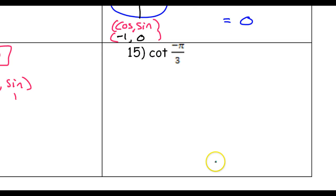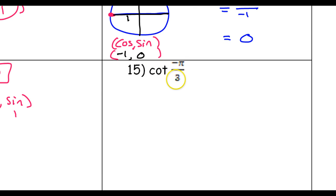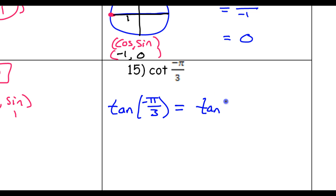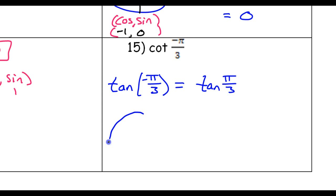Finally, the last problem: cotangent of negative pi over three. Cotangent is a reciprocal trig function — it's the reciprocal of tangent. So we'll do the tangent of negative pi over three first, and then whatever we get, we'll do the reciprocal of that. The tangent of negative pi over three is going to be the same thing as the tangent of the reference angle pi over three, give or take a negative sign — we'll figure that out by looking at the unit circle.